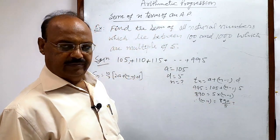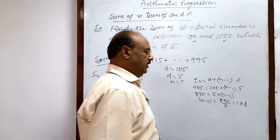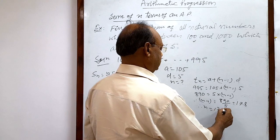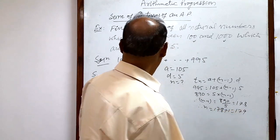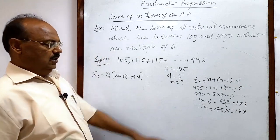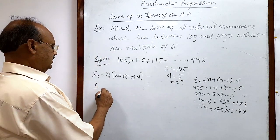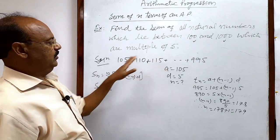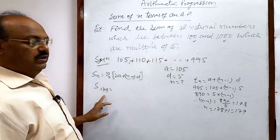890 divided by 5 is equal to 178. So therefore n is equal to 178 plus 1, which equals 179. So we have to find out the value of S179, because total number of terms between 100 and 1000 is 179.